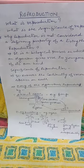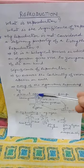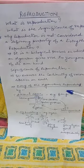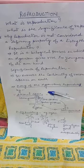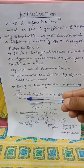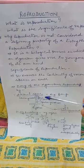And the species may soon get extinct. You can see here that many organisms reproduce by various means. Some of them reproduce by spores, like the fungi.